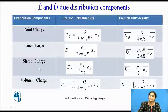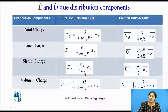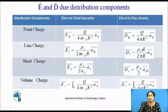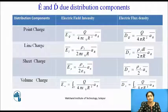Next is the sheet charge, also called surface charge. For surface charge distribution, the electric field intensity is ĒS = ρS / (2ε) · ān. Moving ε₀ to the left-hand side gives the surface electric flux density: D̄S = ρS / 2 · ān. The direction n can be in any direction — for Cartesian coordinates, n may be x, y, or z.